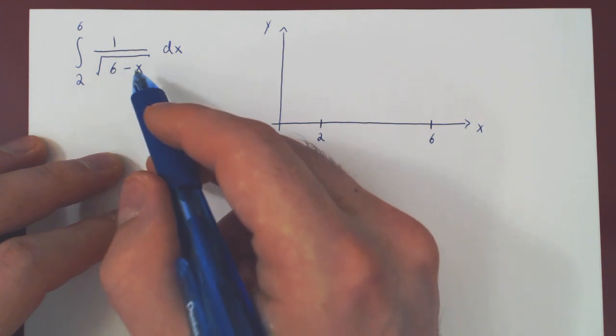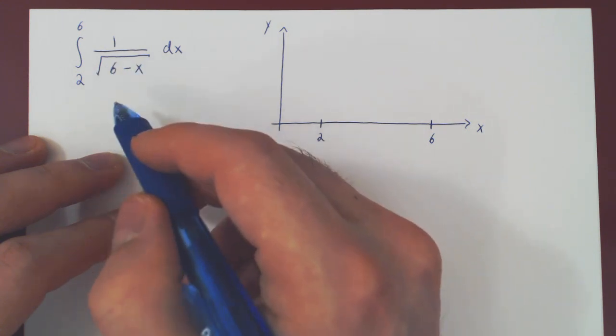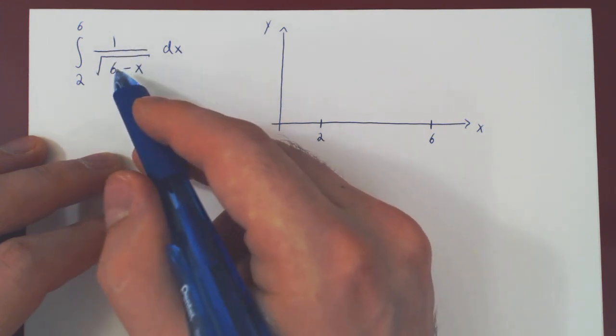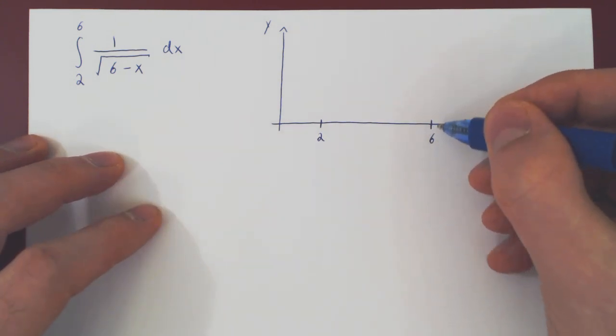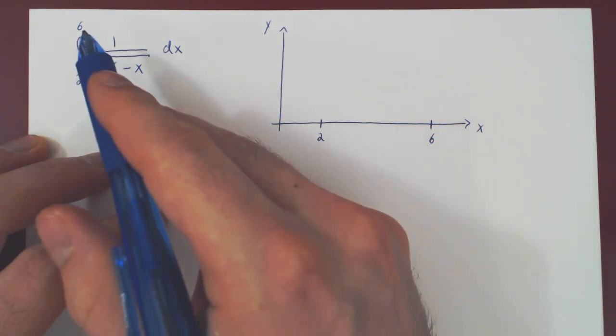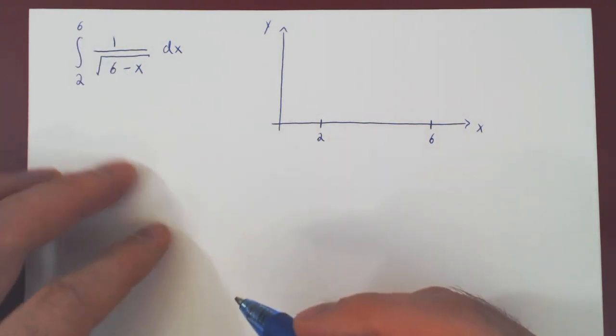6 minus 6 is 0, the root of 0 is 0, and we have 1 over 0. And so the function blows up. And so we have an infinite discontinuity at x equals 6, at the upper bound of integration.